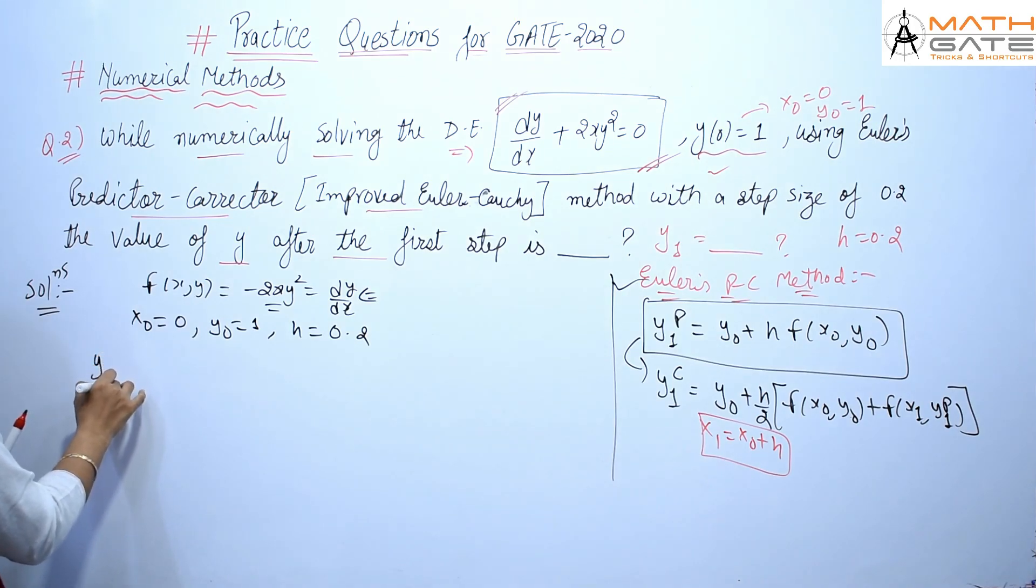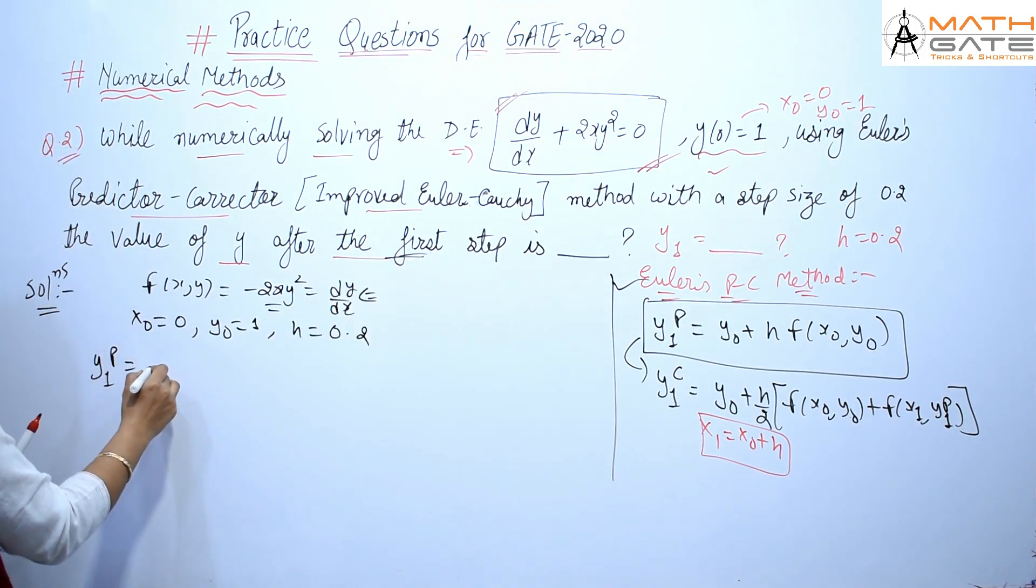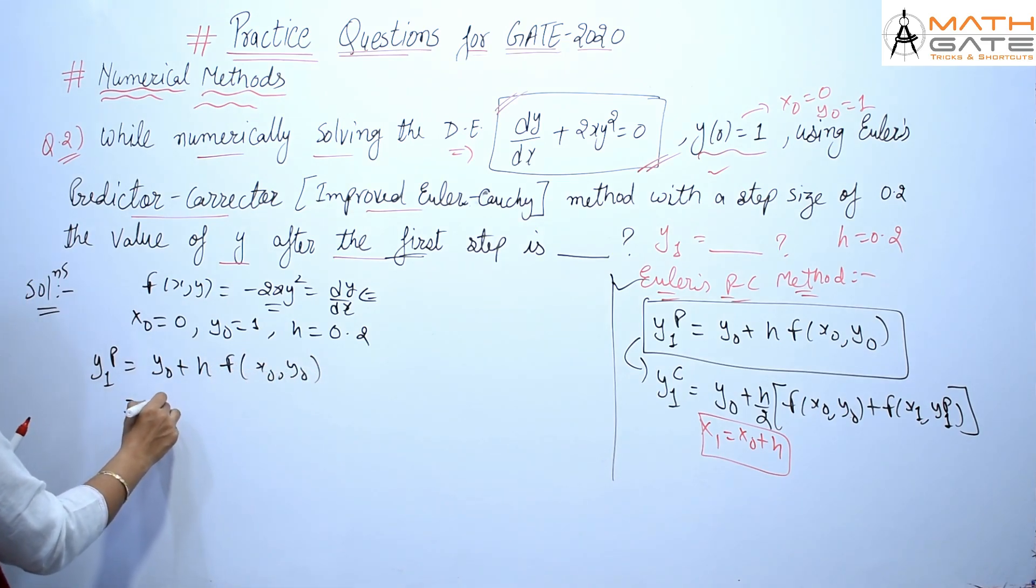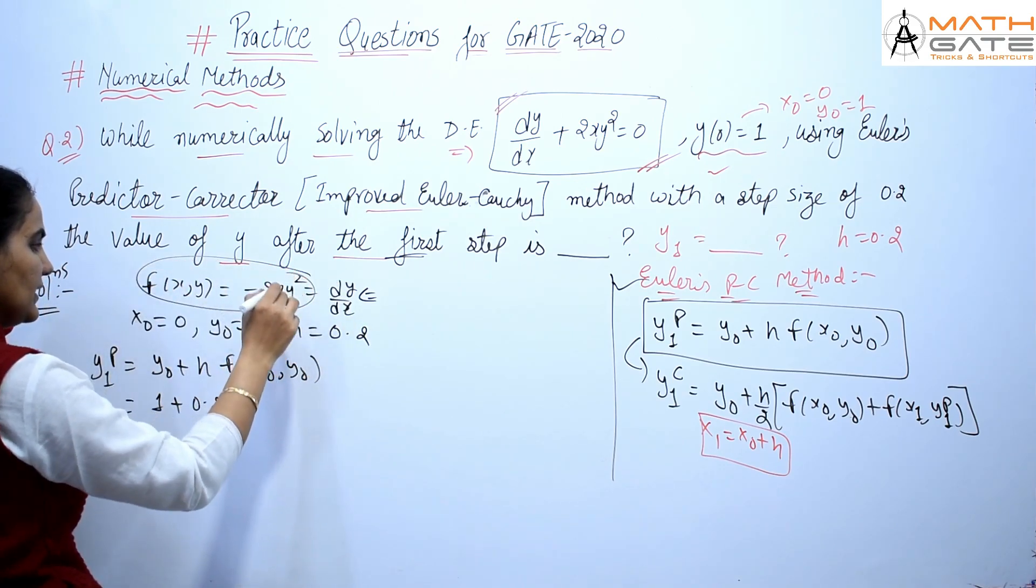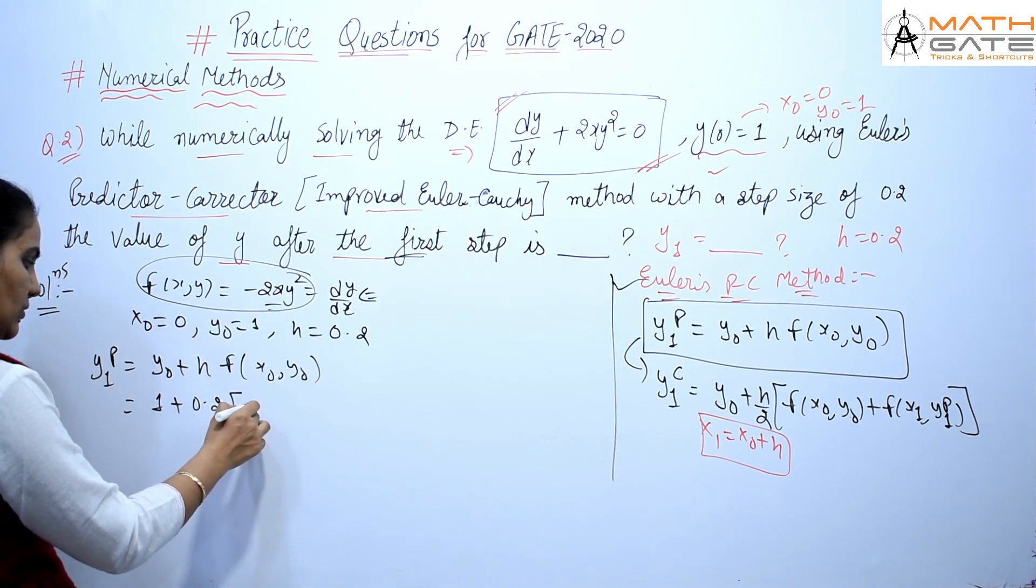So first let's get y₁ᵖ. How much will y₁ᵖ be? y₁ᵖ = y₀ + h·f(x₀, y₀). So y₀ = 1 plus h = 0.2, and f(x₀, y₀) means what do you put in this function? You put in x₀ and y₀. So how much will this value be?